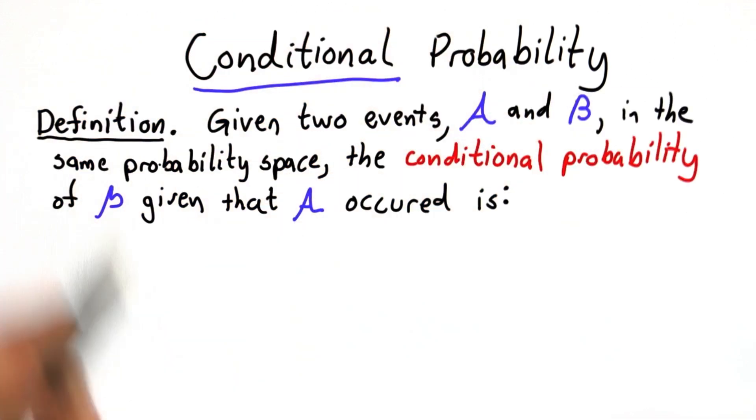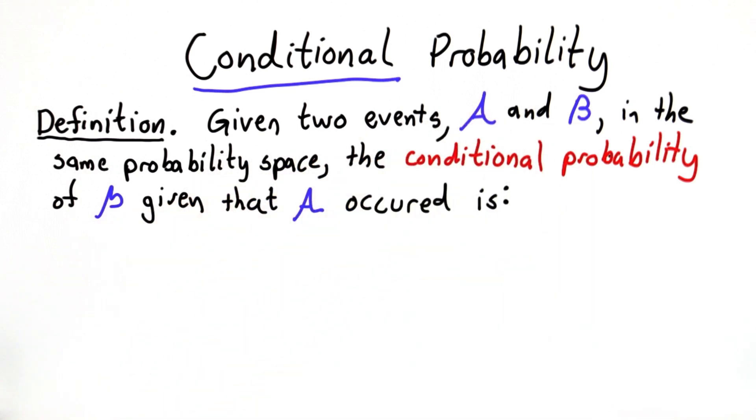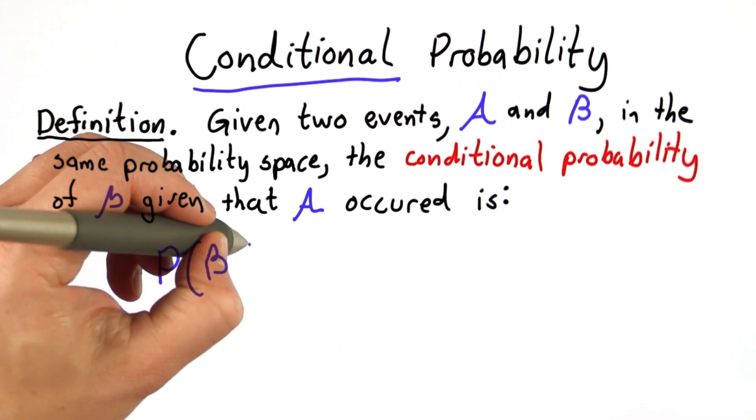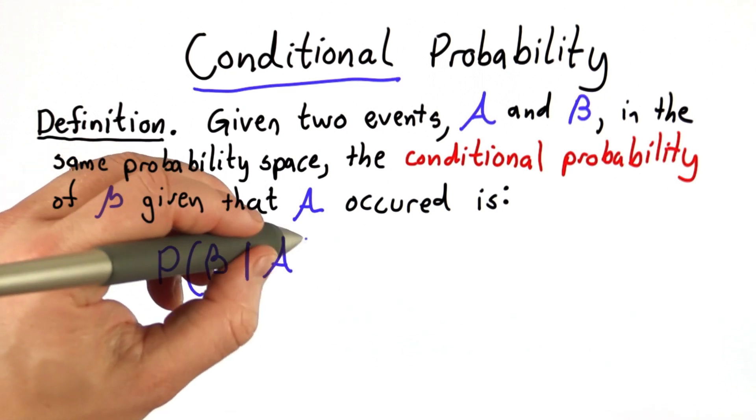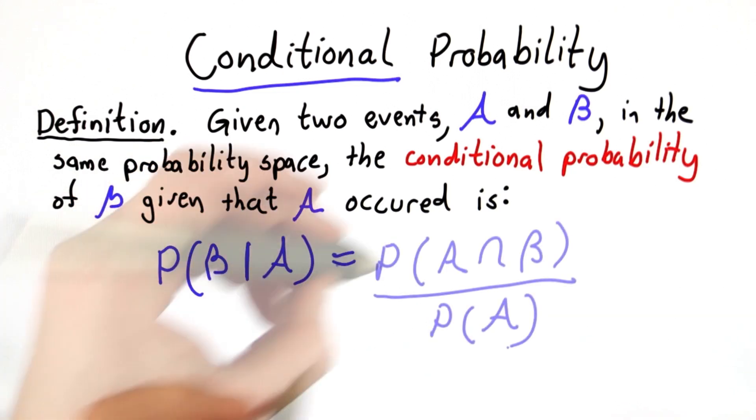Here's our definition of conditional probability. If we have two events, we'll call them A and B, and they're in the same probability space, the conditional probability of B given that A occurred is written like this: the probability of B given A. We use the bar to indicate conditional probability, and it's defined by this formula: the probability of A intersected with B divided by the probability of A.